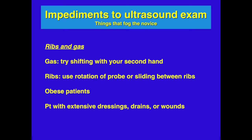A few impediments to ultrasound exams: ribs and gas are the biggest ones. For abdominal gas such as colon gas, try shifting with your second hand or applying slow and steady pressure. For ribs, you can use rotation of the probe or slide between them. Obese patients can be difficult to view, though not always, so you should always try. In the surgical ICU, patients with extensive dressings, drains, or wounds can also be a problem.